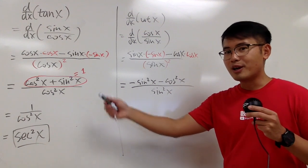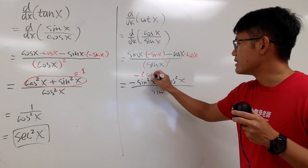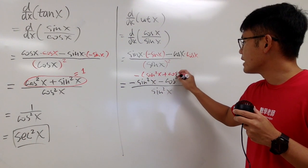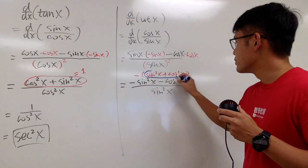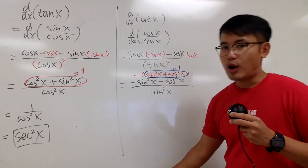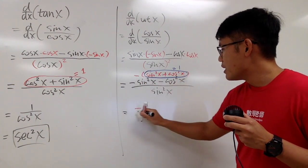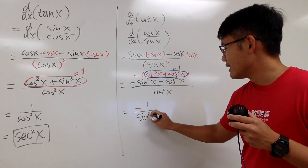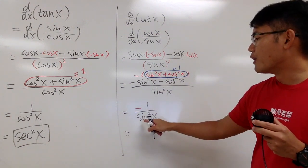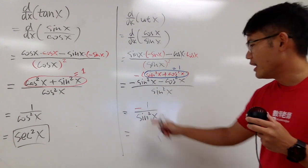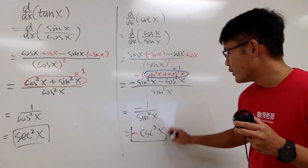Similar to what we did earlier, but notice this is minus and that's also minus. So we factor out the minus first, giving us negative times sine squared x plus cosine squared x, which equals 1. So we get minus 1 on top over sine squared x. And we have to remember, 1 over sine is cosecant, so 1 over sine squared is cosecant squared. Don't forget the minus — so the result is negative cosecant squared x.